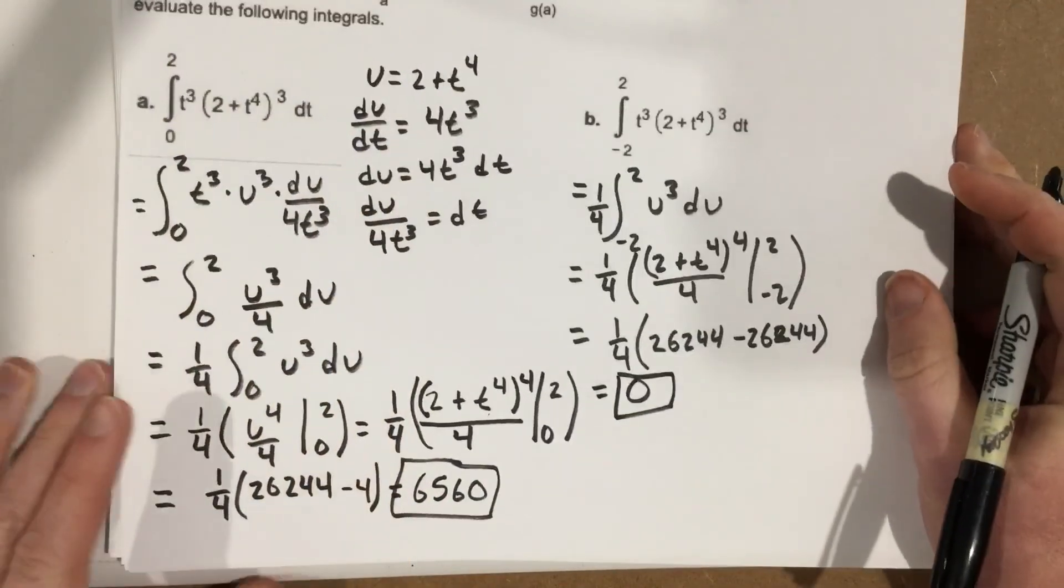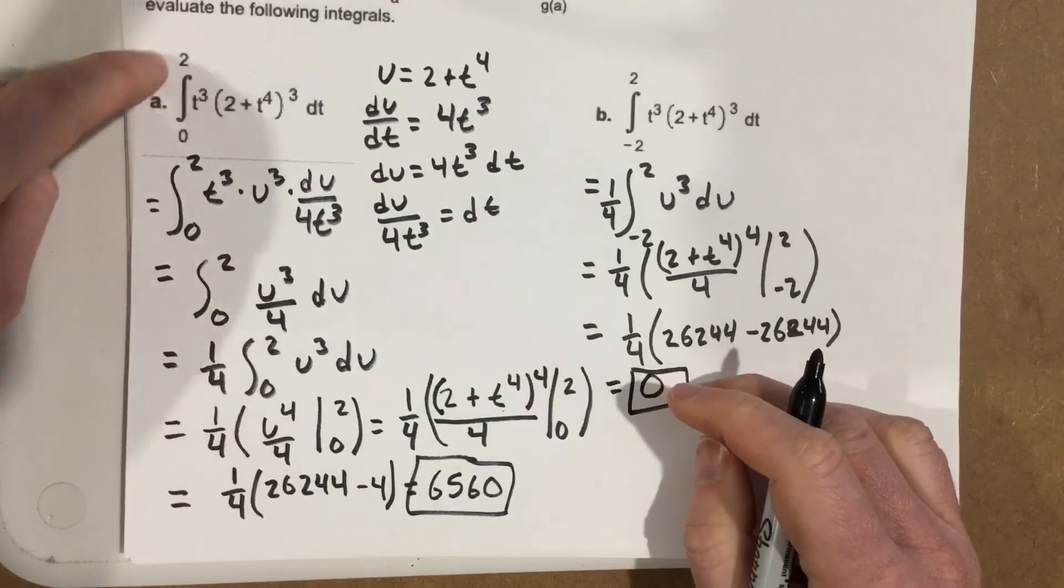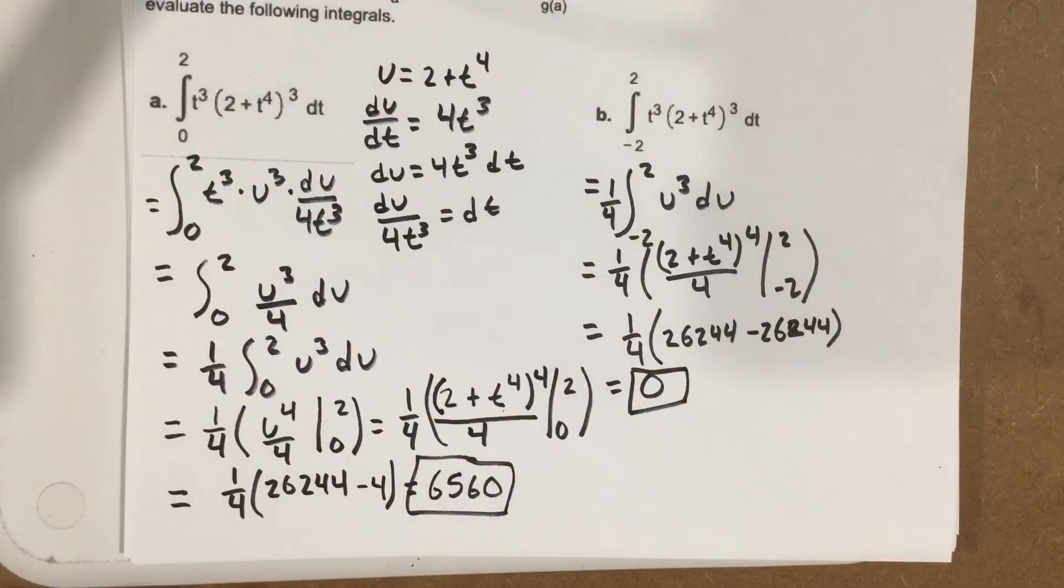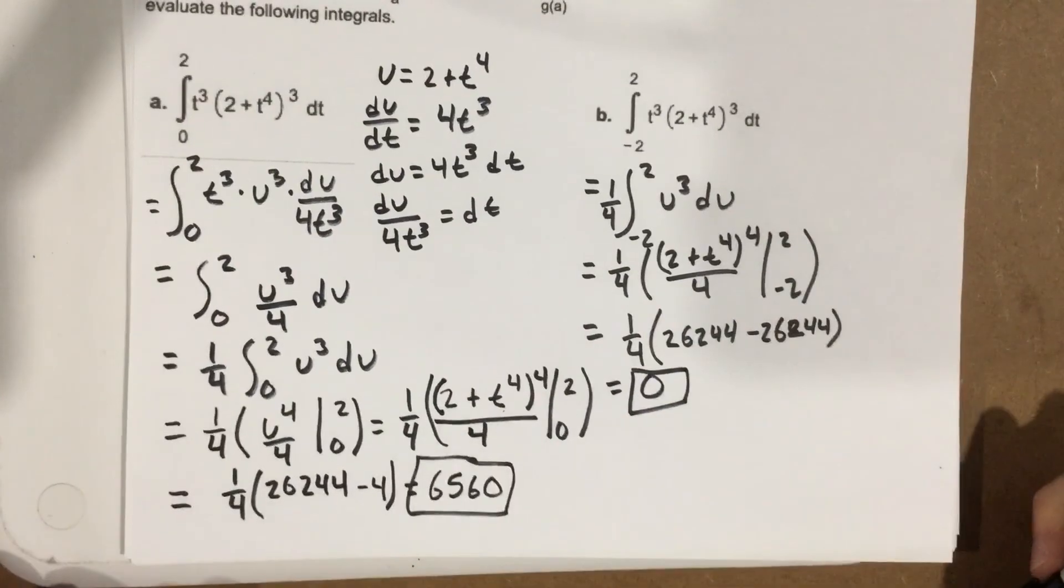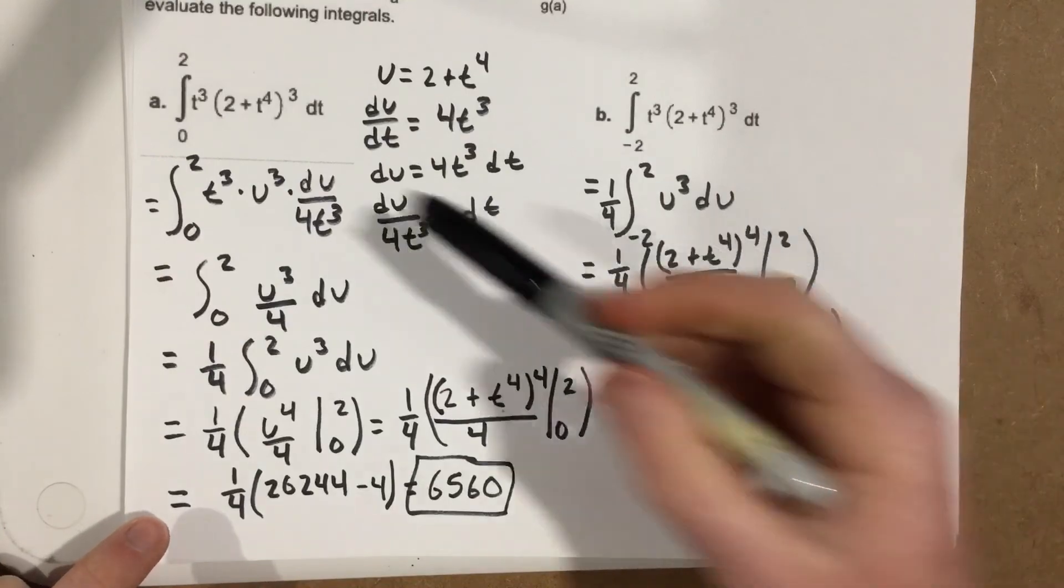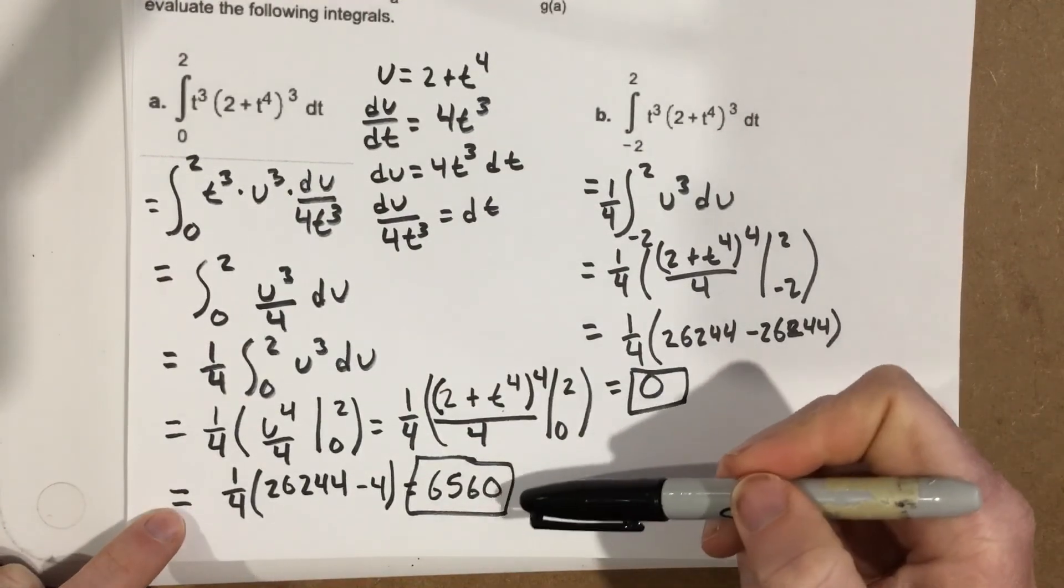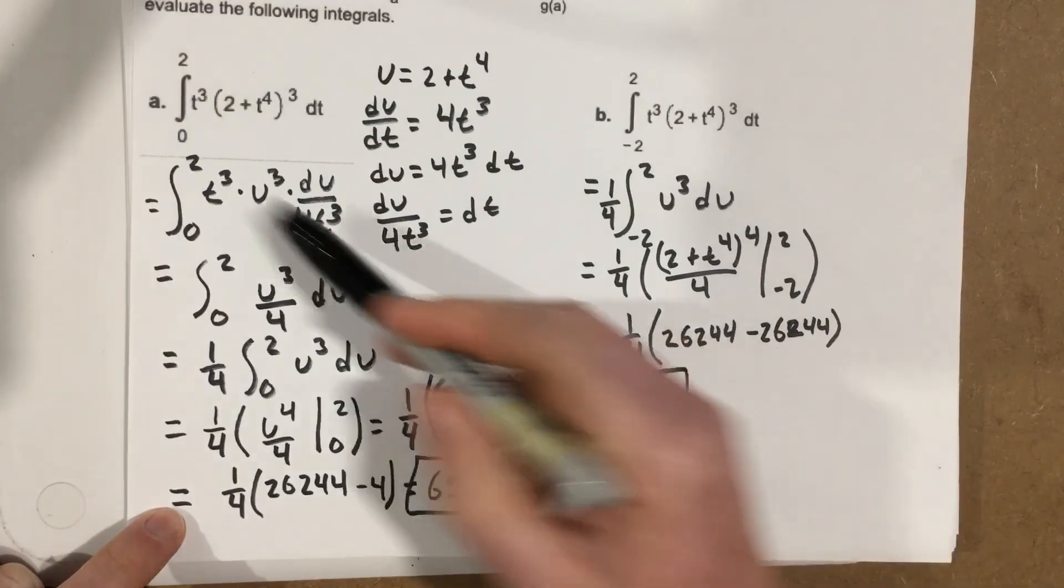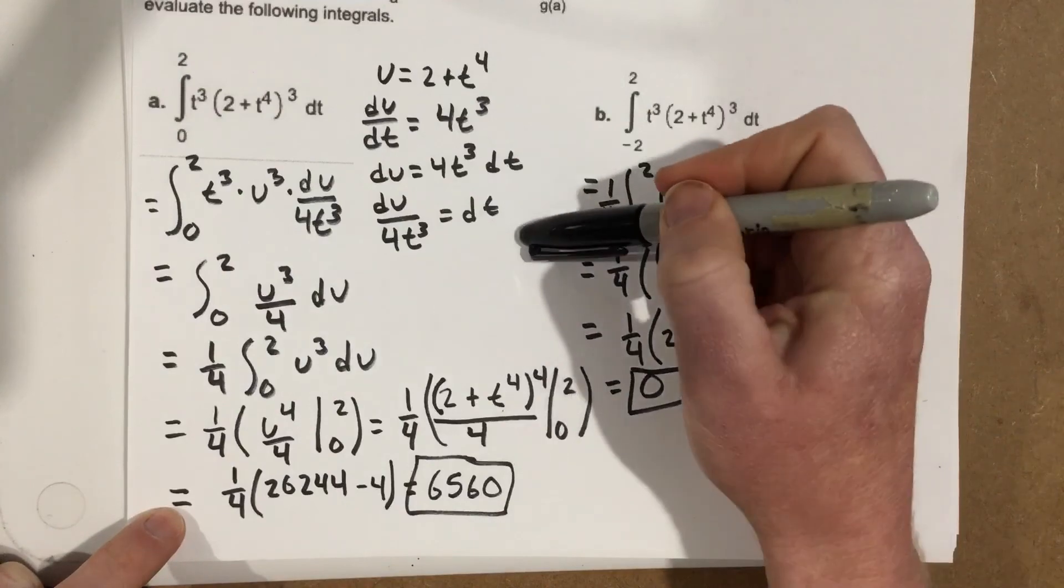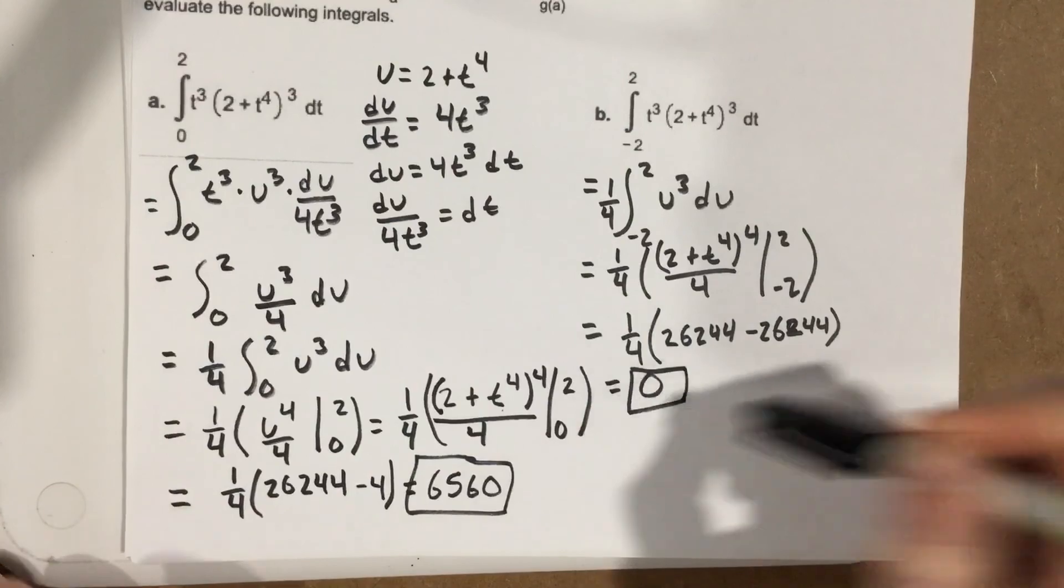So, I evaluated the same function using two different limiting values here, two different x values, and I ended up with area of 6,560 and an area of 0 for the second one. If I ended up with 0, what that really tells us is that this was a positive area from 0 to 2, and from negative 2 to 0, it was the exact same area, but that area was negative, and that's why they canceled out.